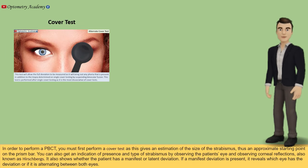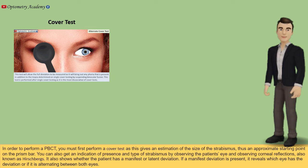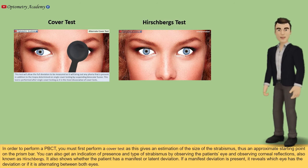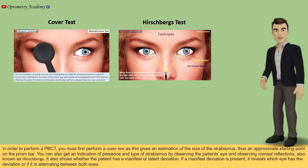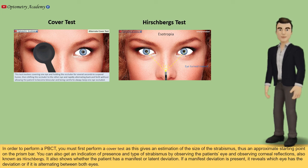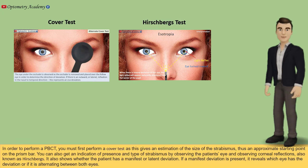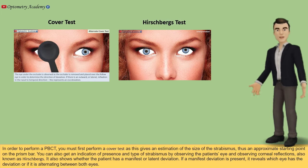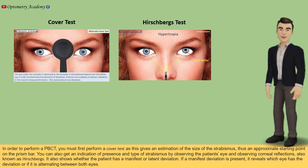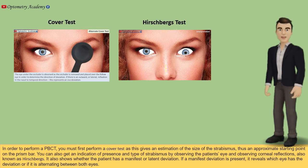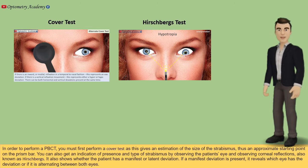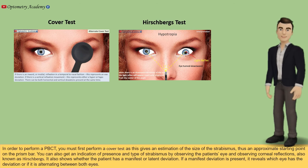To perform a PBCT, you must first perform a cover test, as this gives an estimation of the size of the strabismus and thus an approximate starting point on the prism bar. You can also get an indication of the presence and type of strabismus by observing the patient's eyes and observing corneal reflexes, also known as Hirschberg. It also shows whether the patient has manifest or latent deviation, and if manifest, which eye has the deviation or if it is alternating between both eyes.